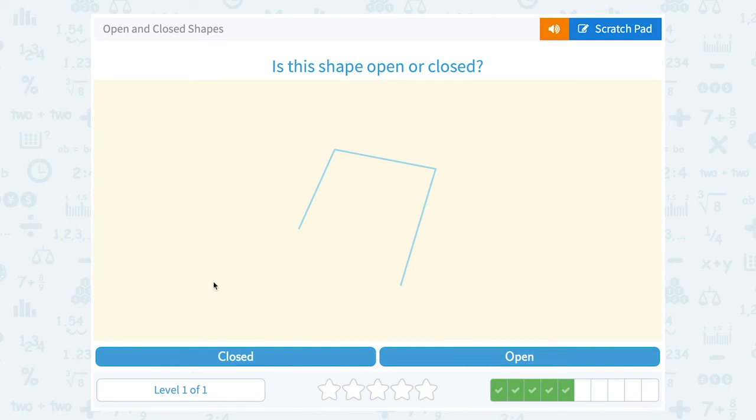Okay, now this would be an open shape, because you can see the open space here, where these two segments are not connected.